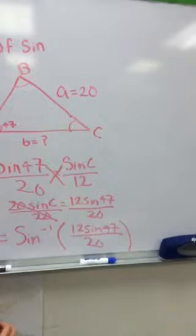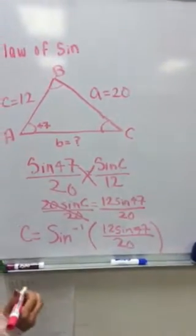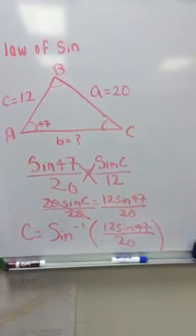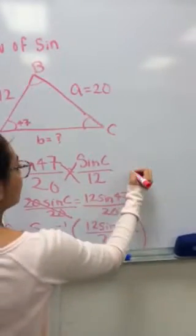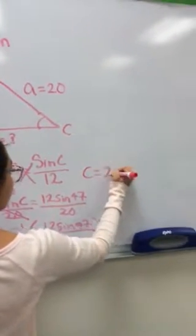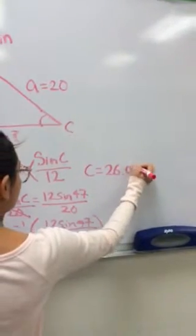You will then plug this into your calculator. To get the inverse, you will press second, and then sine, and then plug in the rest. For angle C, your answer will be C equals 26.03 degrees.